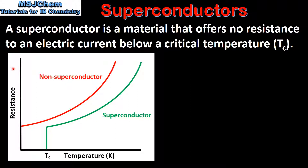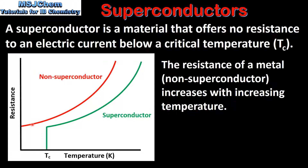Here we have a graph of resistance against temperature for a non-superconductor and a superconductor. The red line on the graph shows the effect of increasing the temperature on the resistance of a non-superconductor metal. As we can see, the resistance of a non-superconductor increases with increasing temperature and decreases with decreasing temperature.